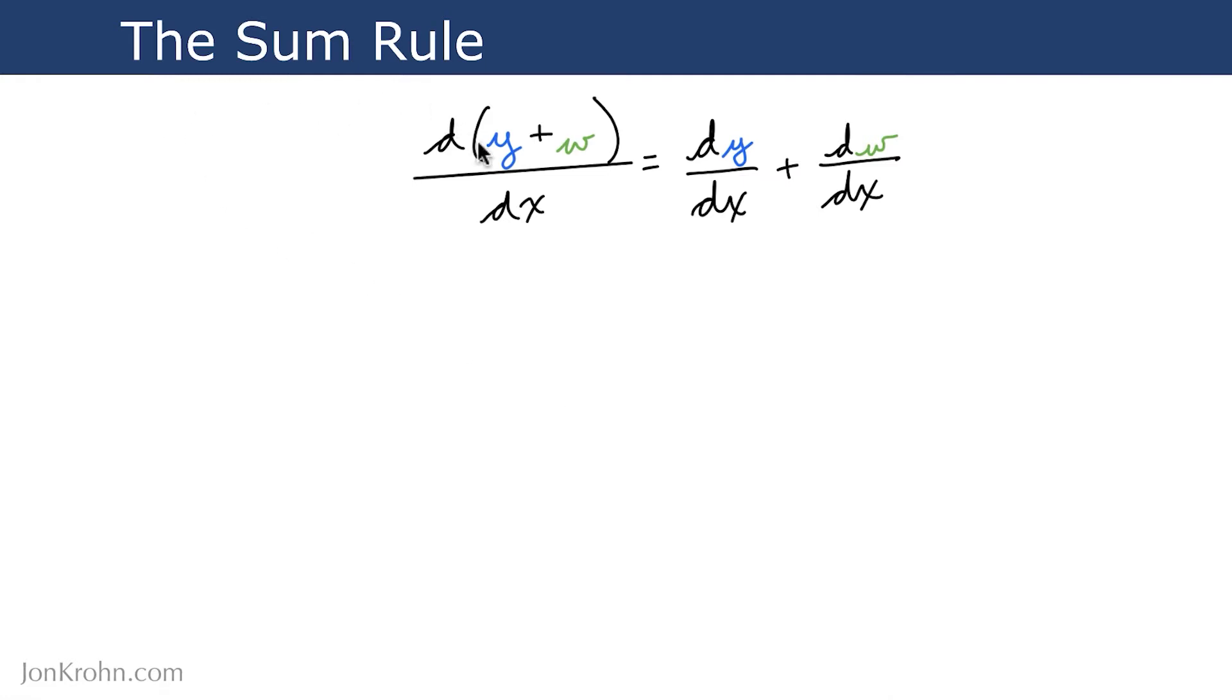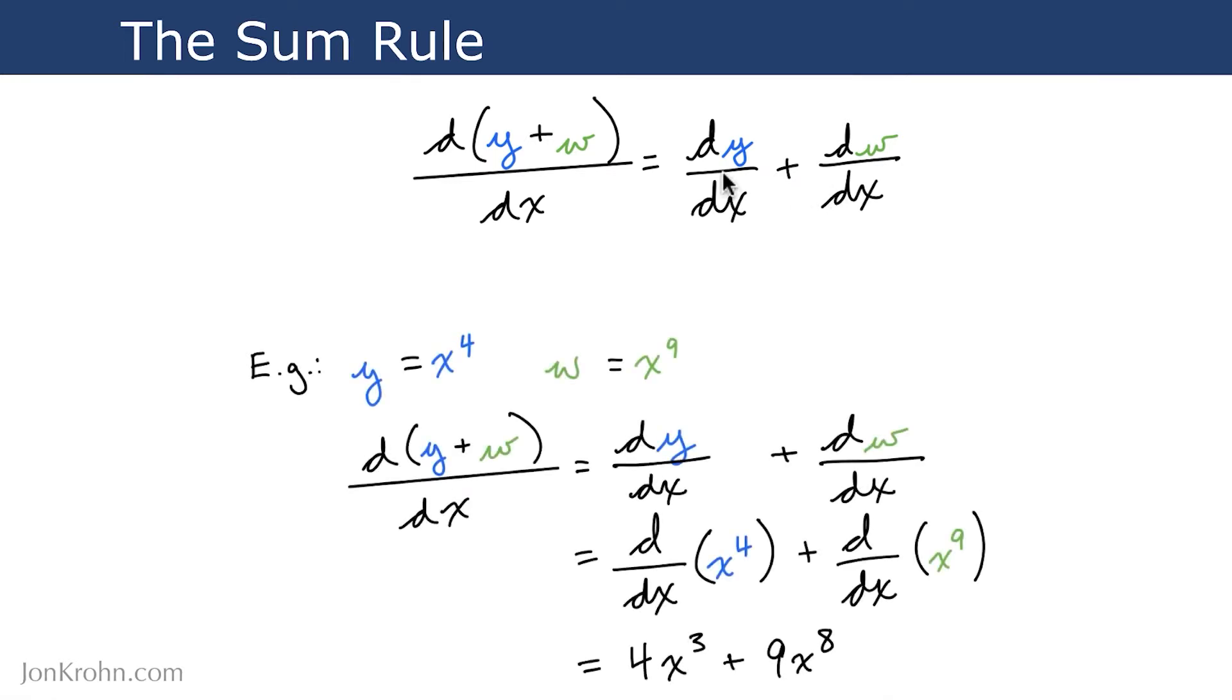The sum rule states that if we have two different terms, we can calculate the derivative of those two separate terms separately. Let's look at an example with numbers to see this in action and make some more sense of it.